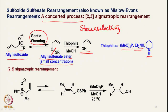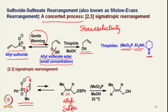As one example, a typical phenyl sulfoxide-based reaction proceeds where the sulfoxide rearranges to give the corresponding sulfenate ester. This sulfenate ester upon cleavage with the thiophile gives the corresponding E-allylic alcohol.